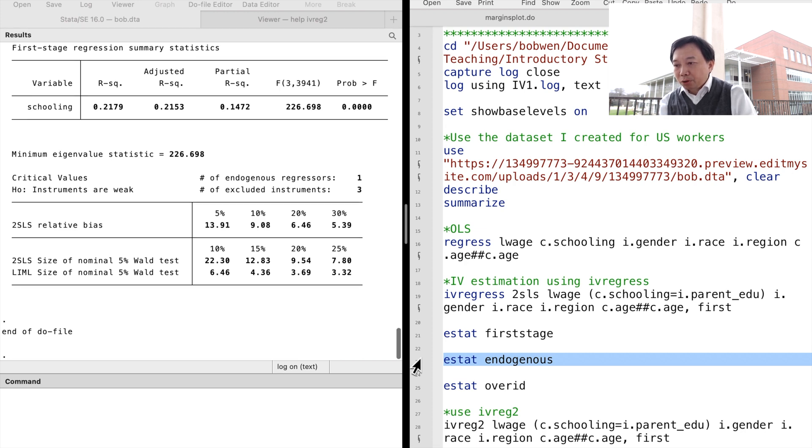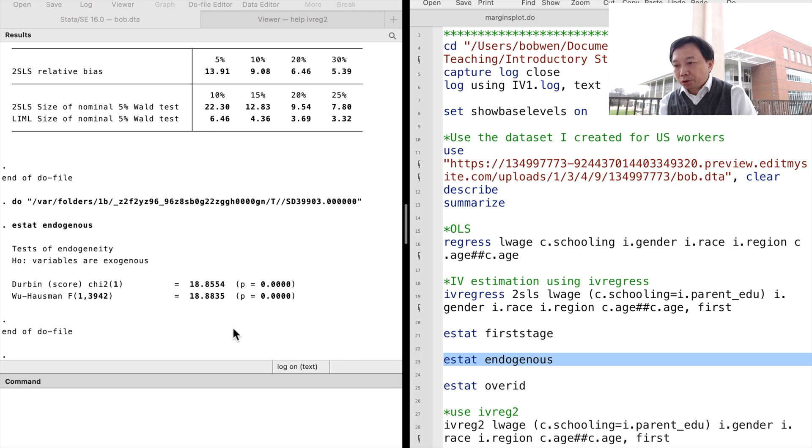The next post-estimation test is the endogeneity test and we type estat endogenous. It tests whether the child's years of schooling variable is in fact endogenous. The null hypothesis is that it is not endogenous and there's no need to use IVs. We reject the null hypothesis because the statistics are high enough. We conclude that we should use the instrument variable method instead of OLS.